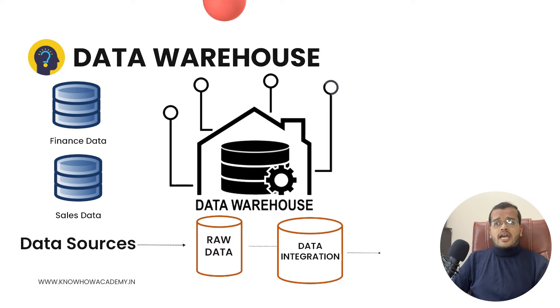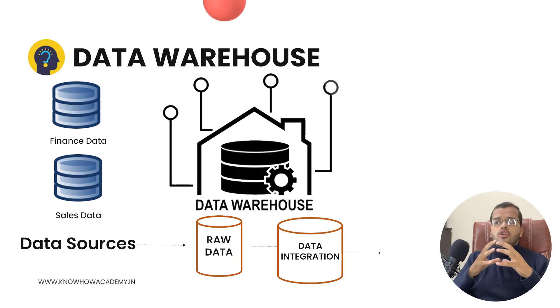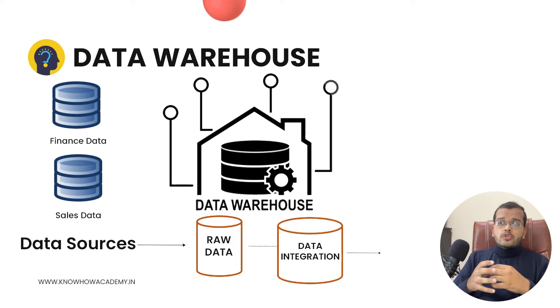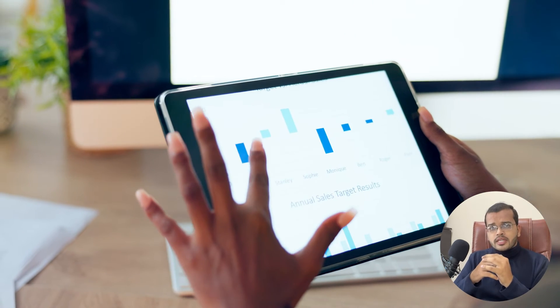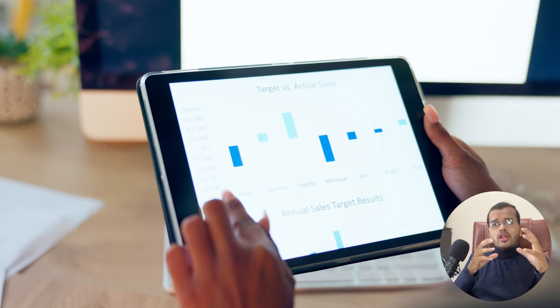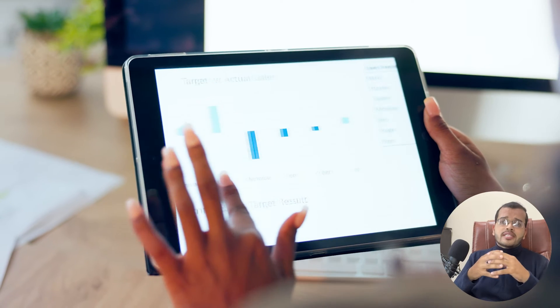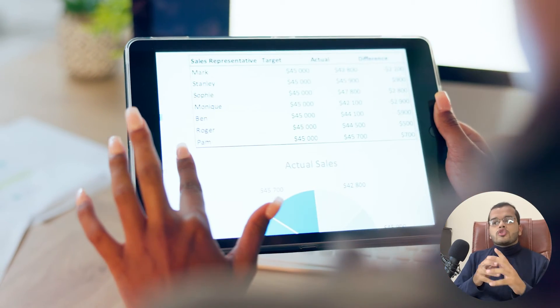For example, we have sales data and financial data that we want to use together, and there should be some sort of relationship between the tables when loading data into our main frame. In sales data we might have five tables, in financial data six tables — all these tables should be interlinked with each other. Some data we don't need; for other data we create relationships and do transformations. After this step, the data is transformed, clean, and integrated.